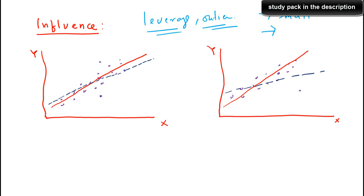So how do we measure the adverse impact of leverage and outliers? We measure it by what is known as influence statistics. There are many influence statistics available. If you're using SAS, R, or SPSS and explicitly request influence statistics while doing the regression, you will get them in the regression output, and you can analyze them to deal with leverage and outlier data points.